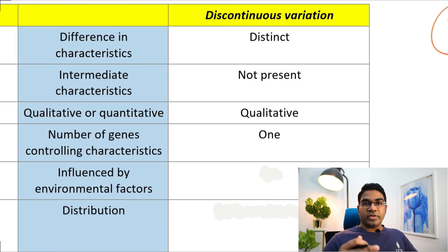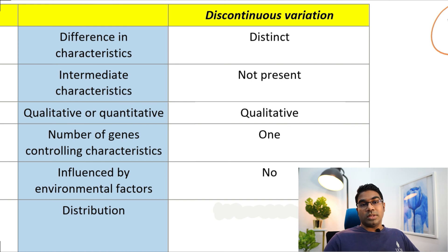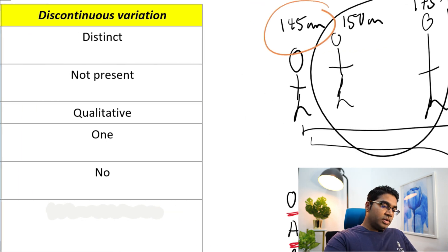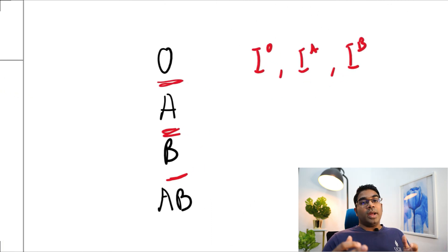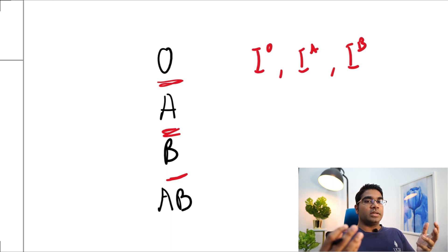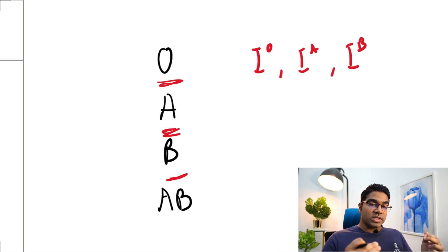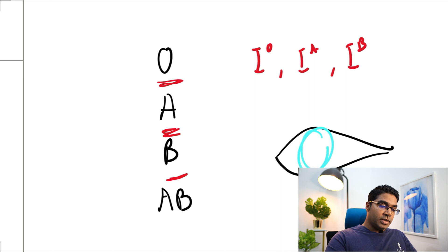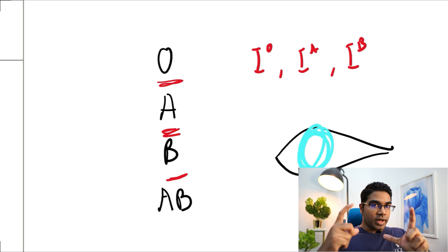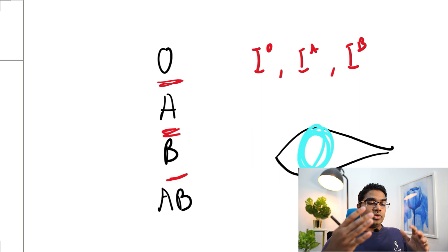The characteristics that show discontinuous variation are usually not influenced by environmental factors. For example, blood group is completely controlled by the genes. No matter what you eat, you will not change the blood group that is determined by your genes. The same goes for eye color — your eye color is not going to change based on what you eat. This is a phenotypic expression of your genotype. There is nothing you can do to change that.